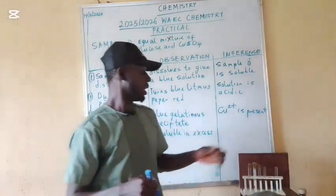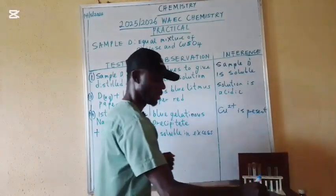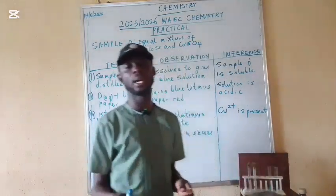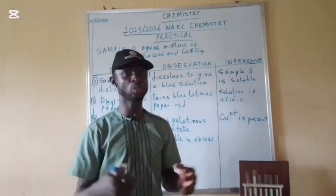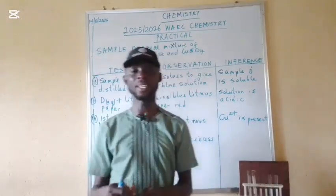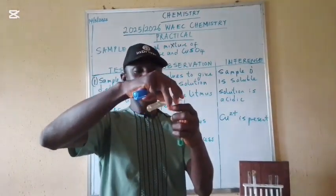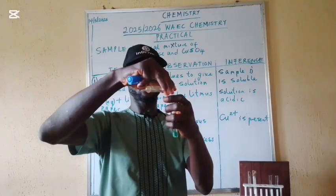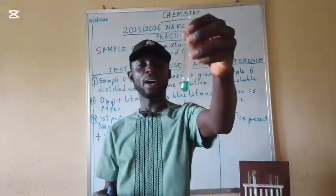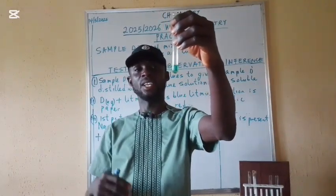Let's test our second portion with ammonia solution. Let's add ammonia to our second portion in drops. From our observation, we have a light blue gelatinous precipitate. So let's now add our ammonia in excess.